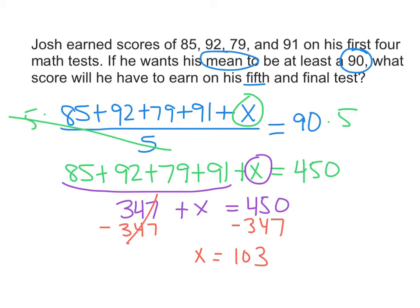So it means that Josh would have to earn a score of 103 on his next test to get that average up to 90. So if the test is only out of 100, that actually would not be possible. But if the test is more than 100 points, then he might be able to make that happen.